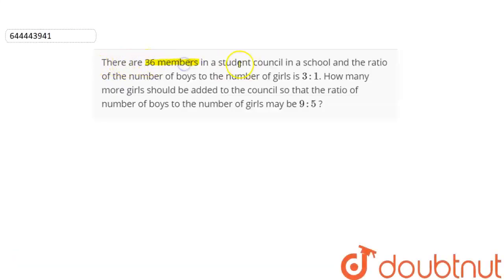The question is: there are 36 members in a student council in a school and the ratio of number of boys to the number of girls is 3:1. How many more girls should be added to the council so that the ratio of number of boys to the number of girls may be 9:5?